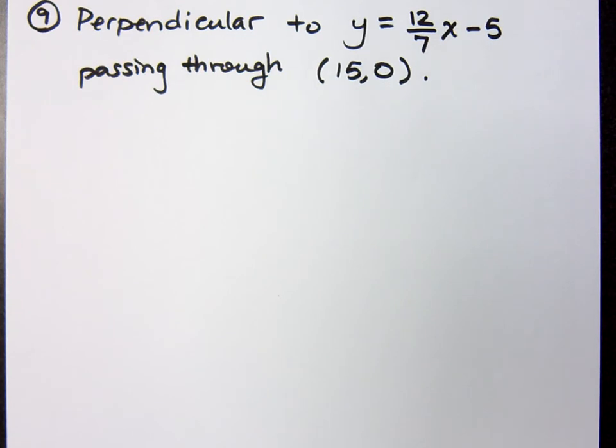What do you know about perpendicular lines? The slopes are flip and switch. The slopes are negative reciprocals. We talked about flip and switch, right?